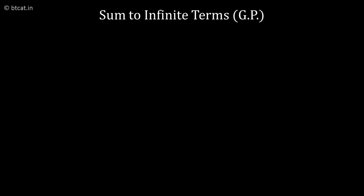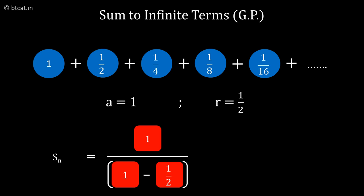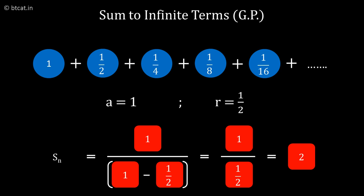infinity, the answer will be: a will become 1 as the first term, r is the common ratio which is 1 by 2. So the answer is 1 upon 1 minus 1 by 2, which is 1 upon half, which is equal to 2. So that is how it is directly applicable and it is one of the most frequently asked questions in the CAT exam and all MBA entrance tests.